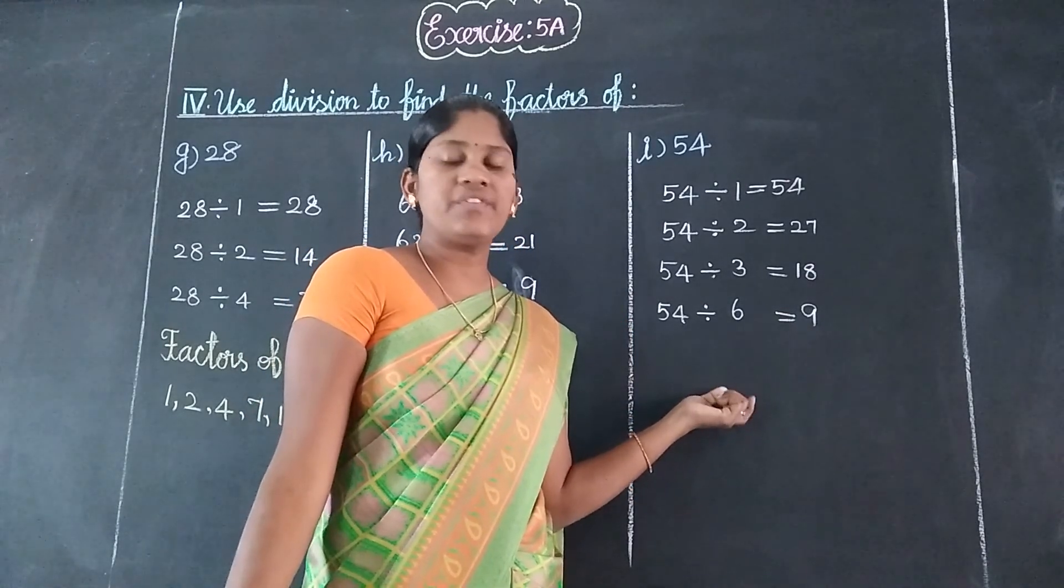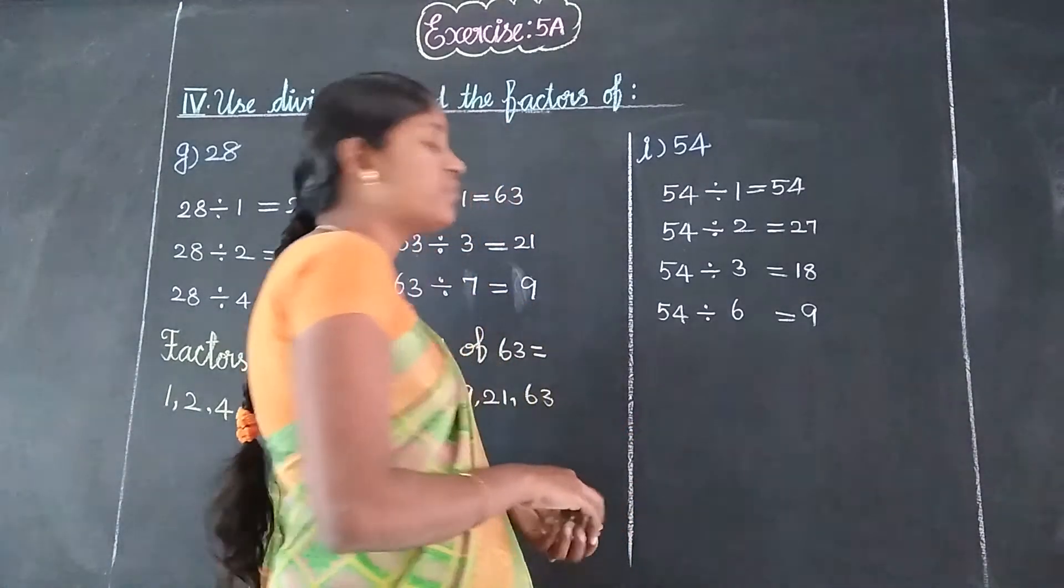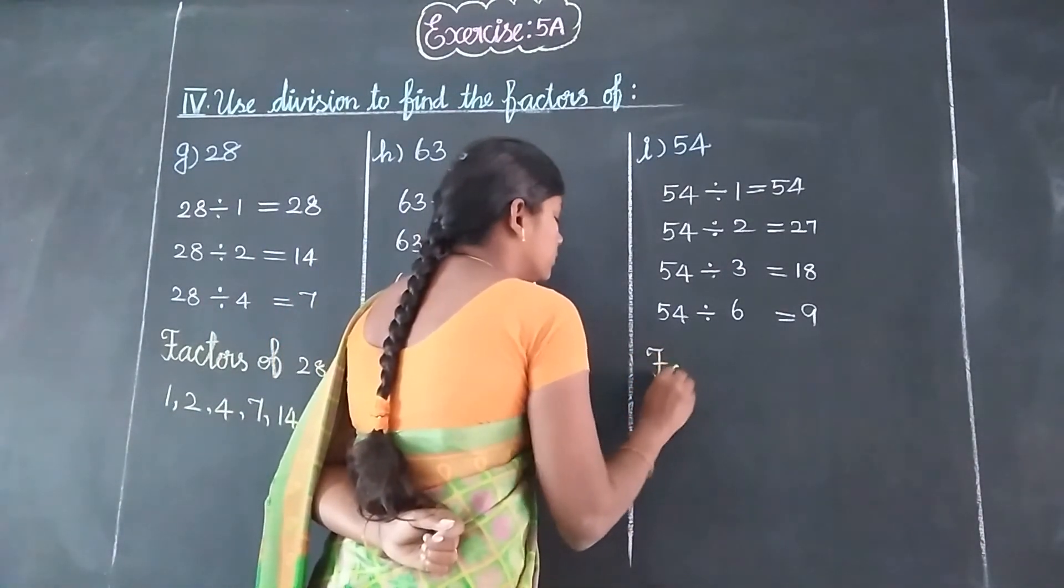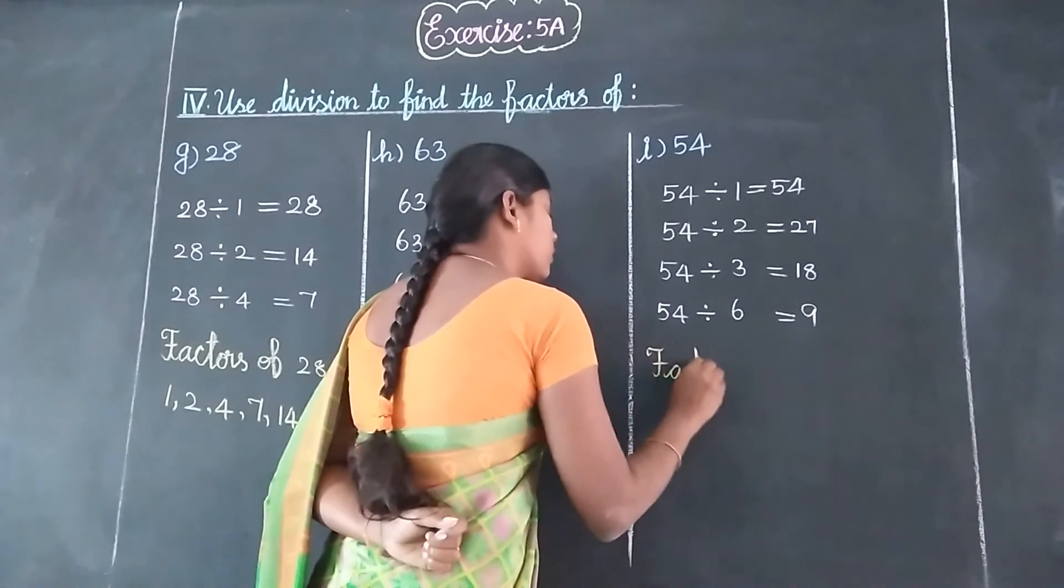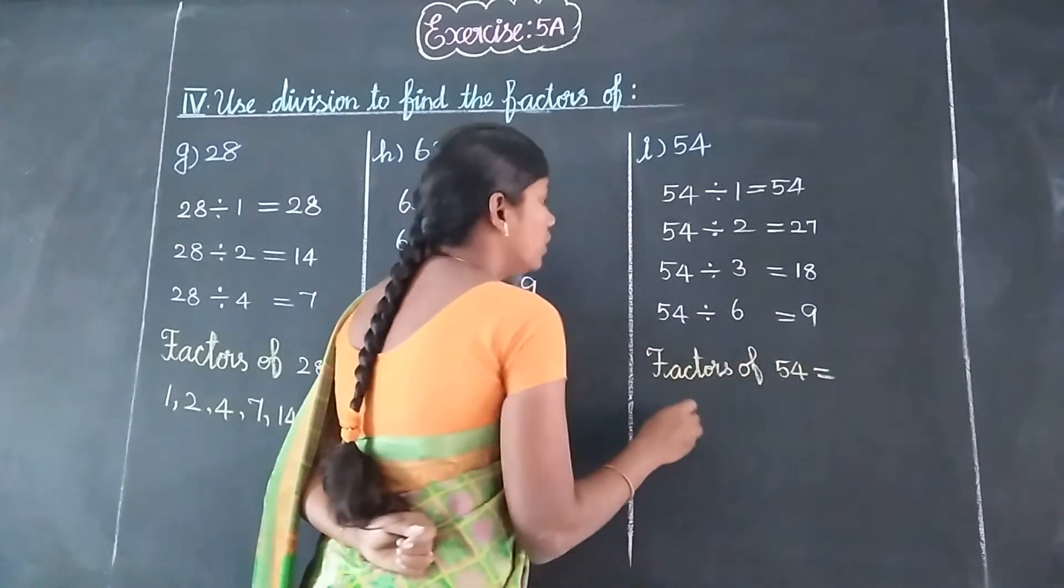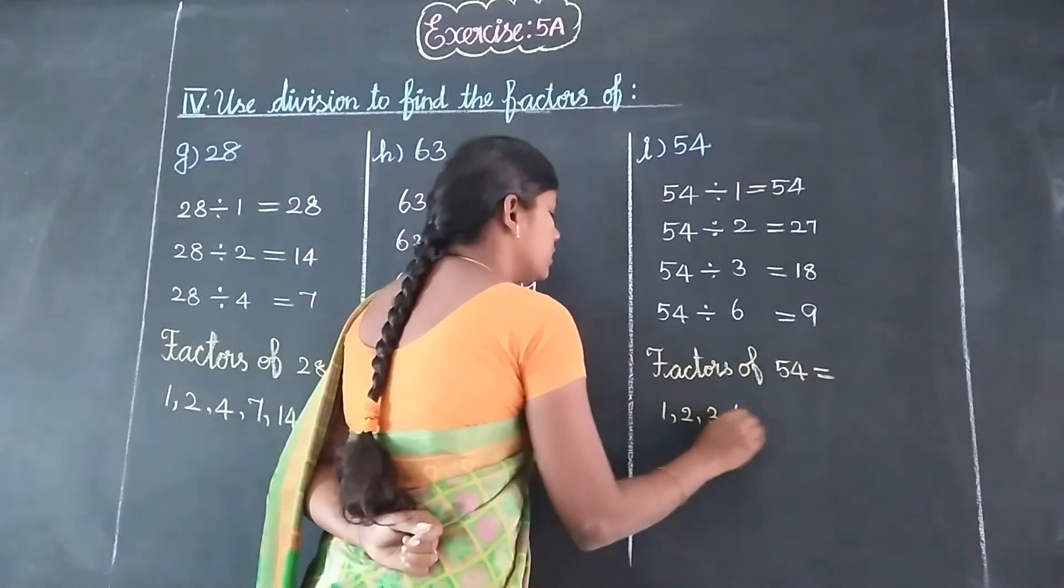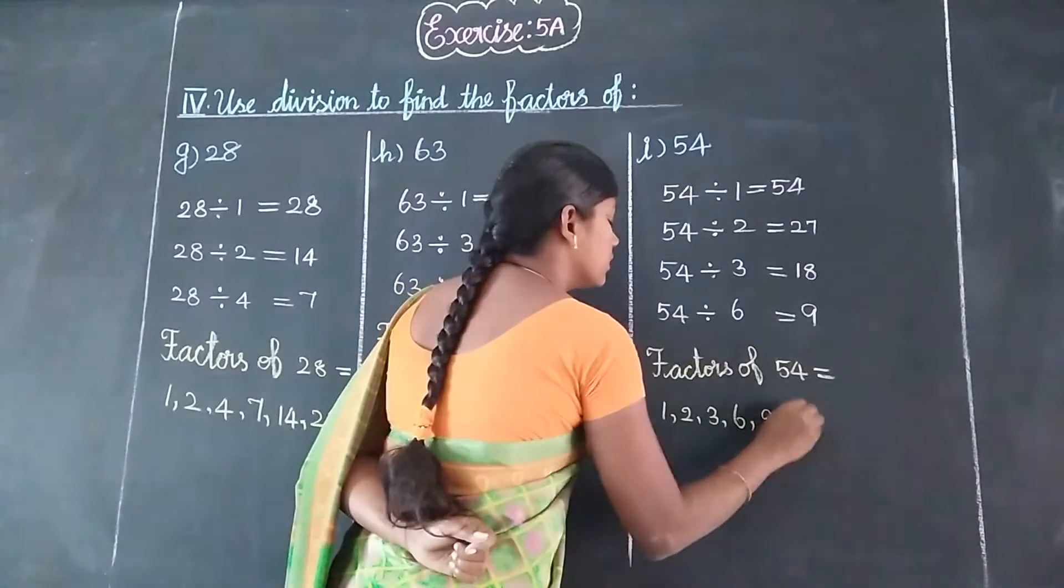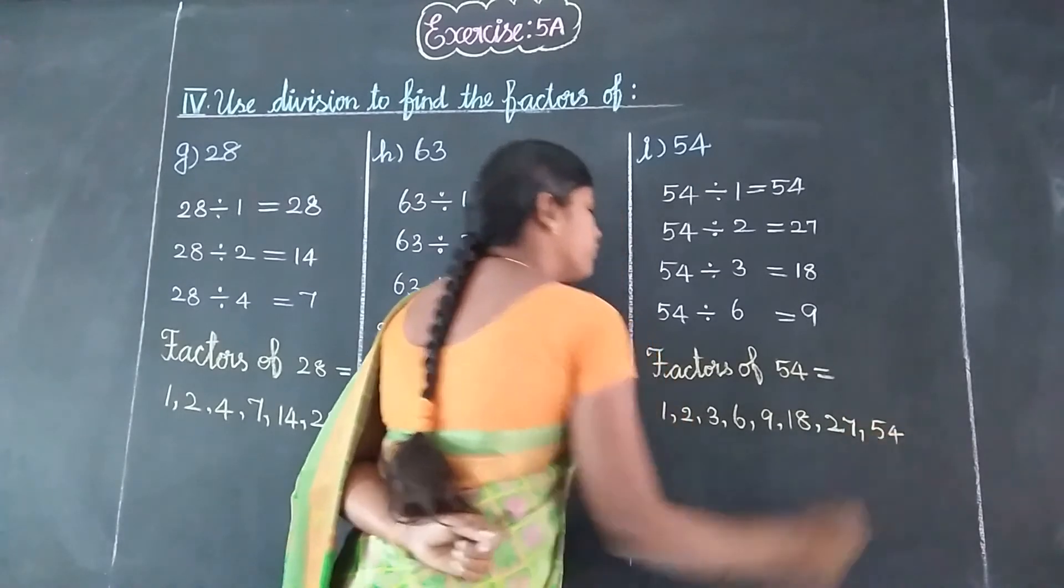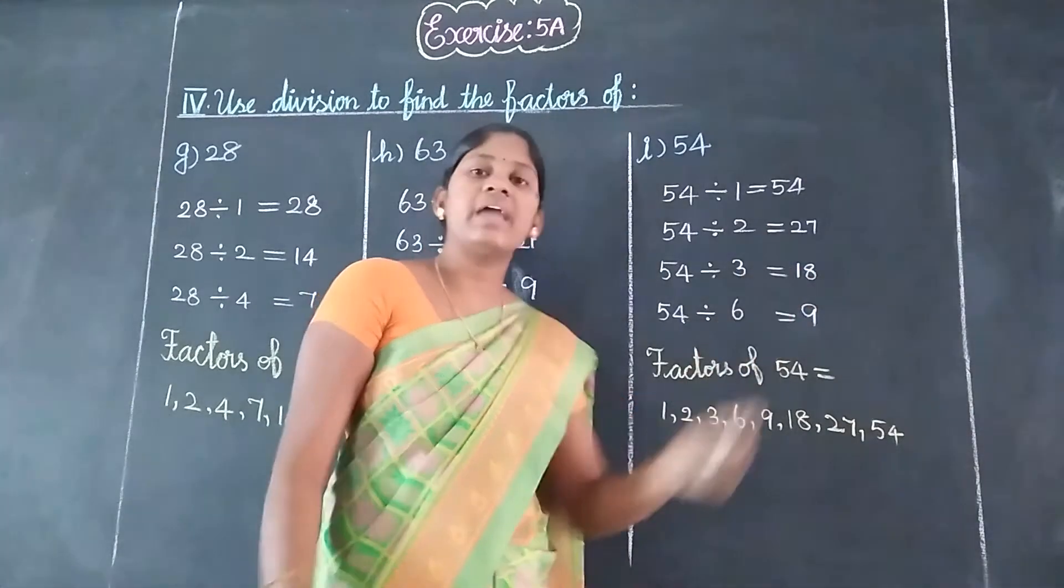7 table doesn't work. 8 table, 54 doesn't divide. 9 table works. Factors of 54 equal 1, 2, 3, 6, 9, 18, 27, and 54.